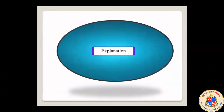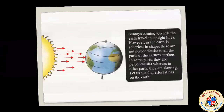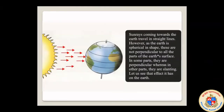Why did we do this activity? All of you know that we get heat and light from the sun. Sun rays coming towards the Earth travel in a straight line. However, as the Earth is spherical in shape, the rays are not perpendicular to all parts of the Earth's surface. We receive perpendicular sun rays in some areas, but due to the Earth's spherical shape, there is an unequal distribution. In some parts the rays are perpendicular, while in other parts they are slanting.